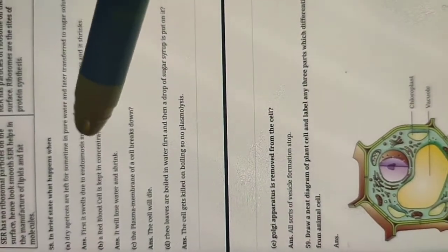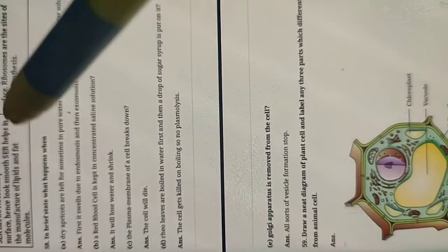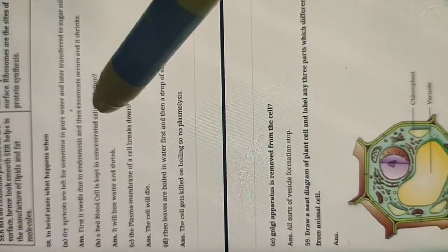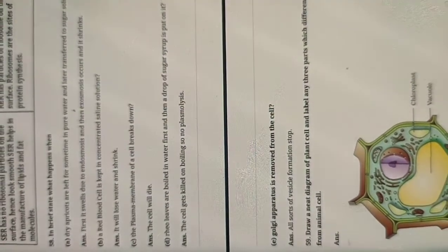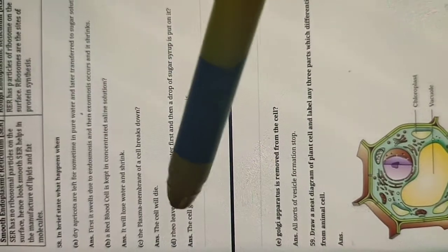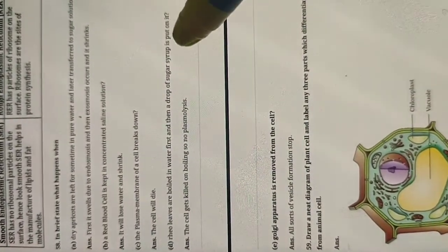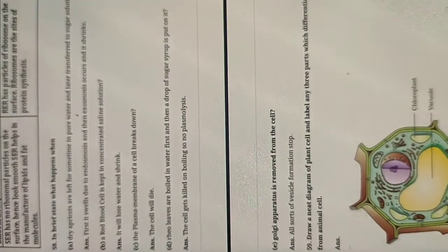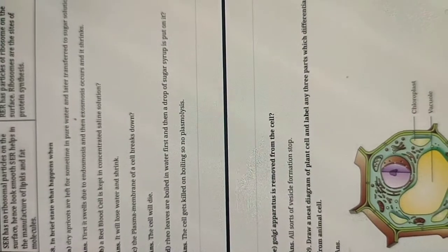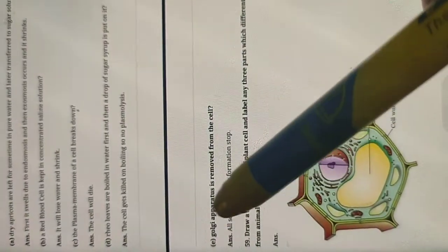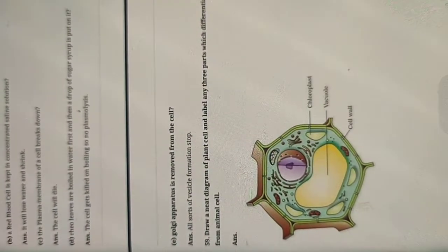If a red blood cell is kept in a concentrated saline solution, it will lose water and shrink. If the plasma membrane of a cell breaks down, the cell will die. If Reo leaves are boiled in water first and then a drop of sugar solution is added, the cell gets killed on boiling — the cell membrane breaks — so when placed in sugar solution, there will be no plasmolysis but the cells would already be dead. If the Golgi apparatus is removed, vesicle formation stops since Golgi acts as a storage and packaging organelle.